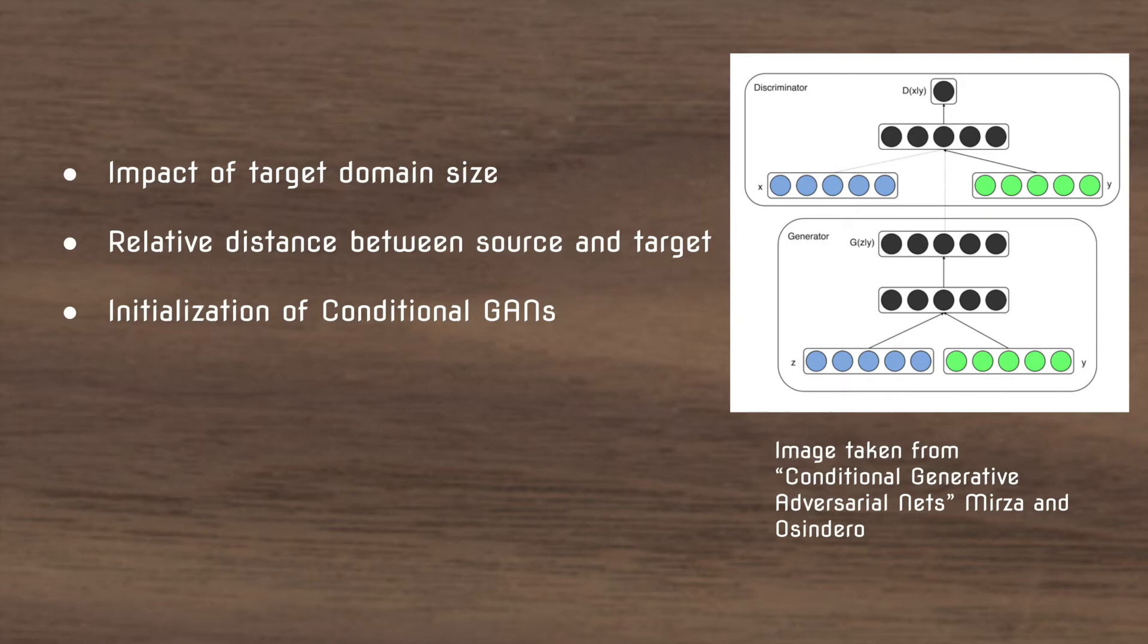Then they want to know the distance between the source and the target. So let's say you go from ImageNet which is pictures of cats, dogs, and airplanes and you want to transition into liver lesion images. This is totally different, so you'd want to see if the distance between these two datasets is going to impact the quality of transfer learning with generative networks.